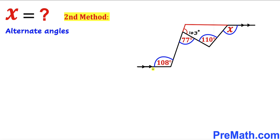Now we can see that this line and this line are parallel to each other and this is our transversal. So this angle and this angle are going to be our alternate angles — they are going to be congruent. If this angle is 108 degrees then this angle is going to be 108 degrees as well.